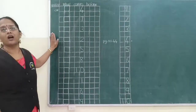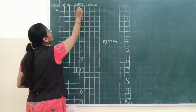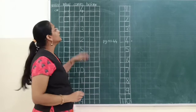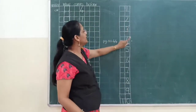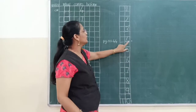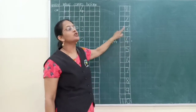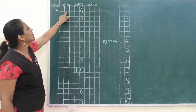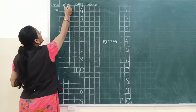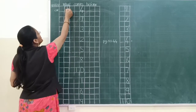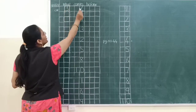Toh abhi yahan pe humein kya likha hai? Sabse pehle number likha hai — Four. Let's see: one, two, three, four. Toh four ke pehle kaun sa number aaya? Three. So here what we will write? We will write number three. Three and then four.